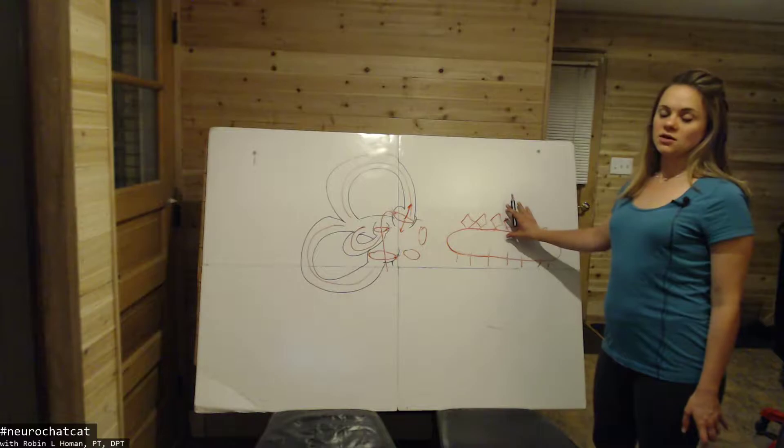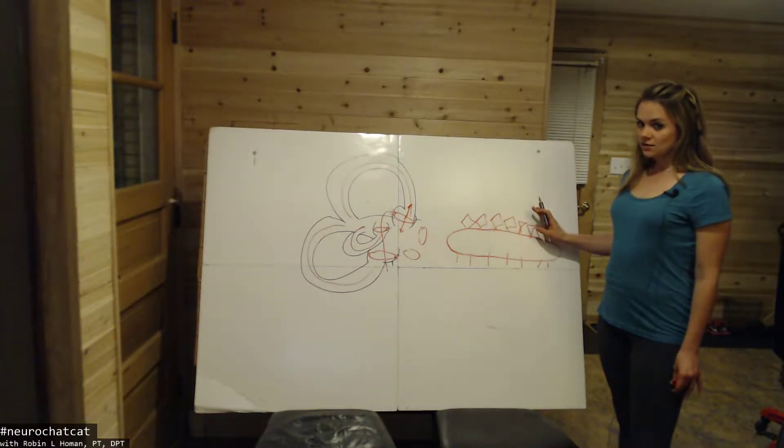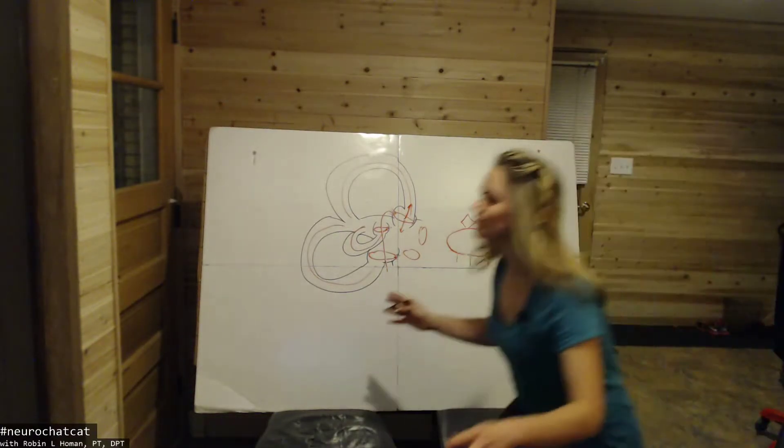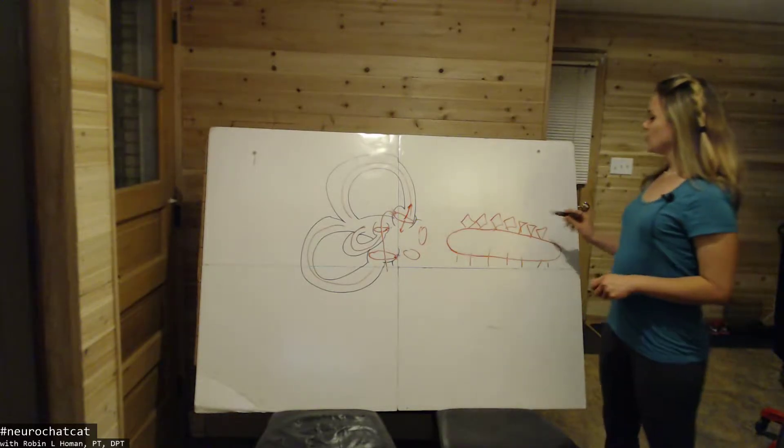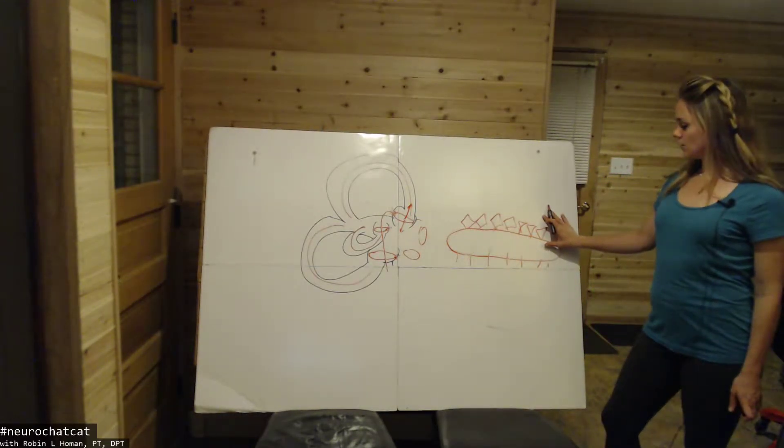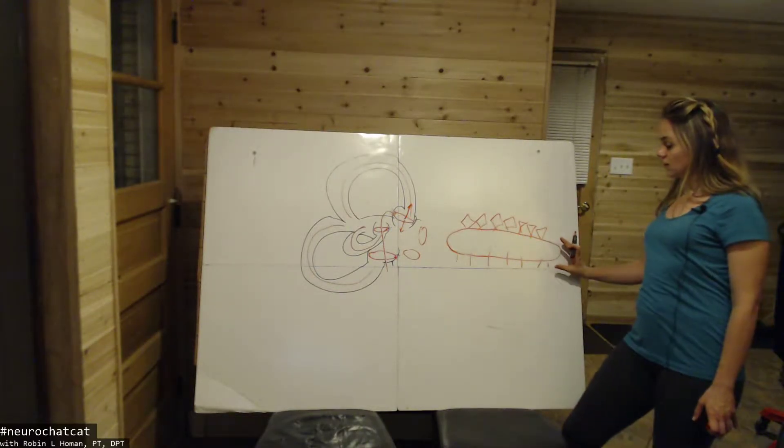These calcium carbonate crystals have a larger density and they're weighted. And so if we think about movement, I'm going to move quickly this way. You can almost imagine that these weighted stones, these otoconia, are going to be kind of left behind as everything else moves forward.